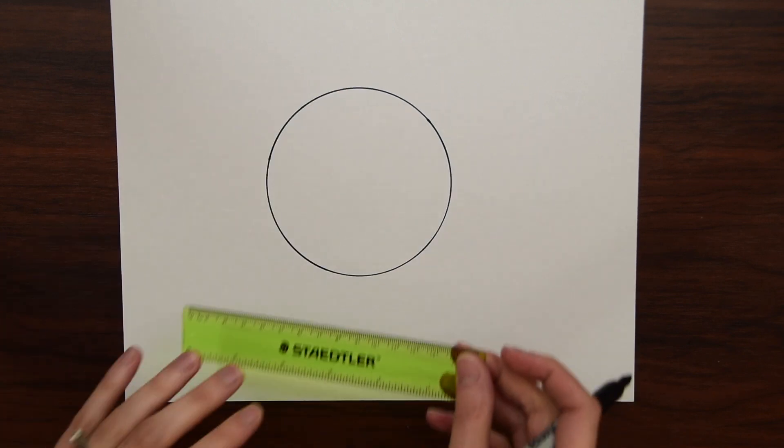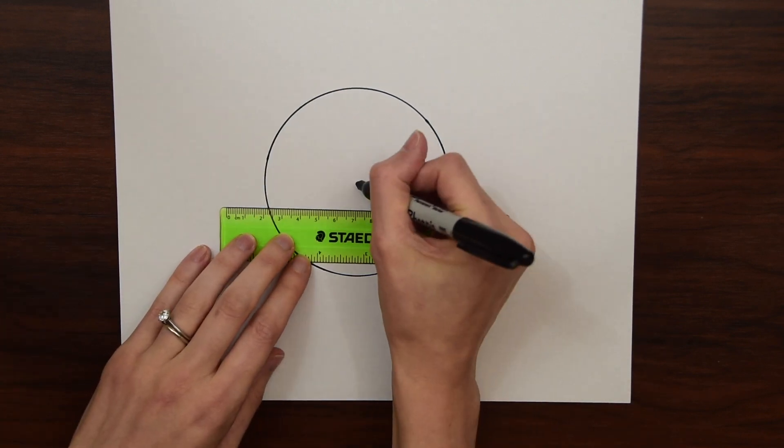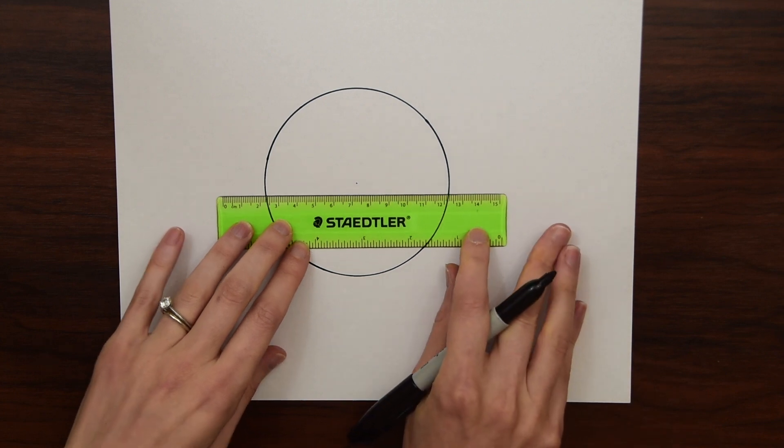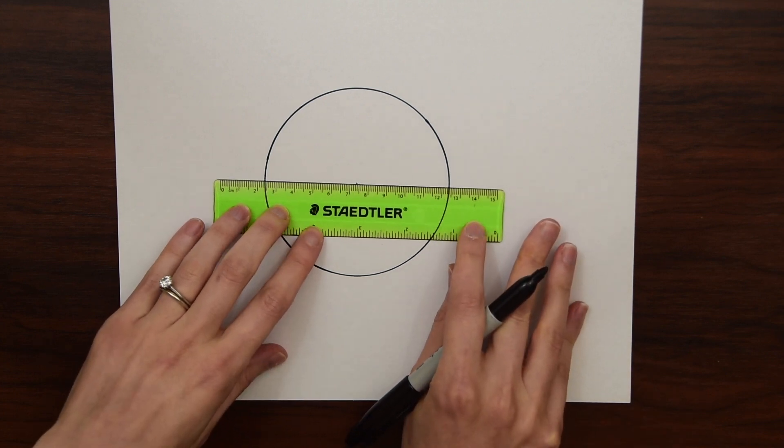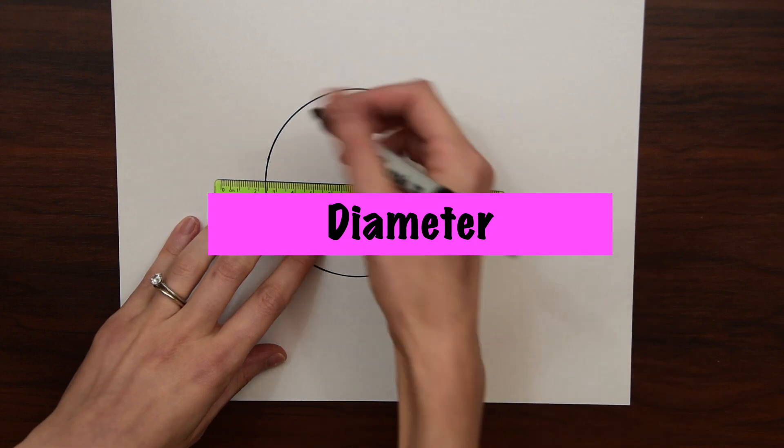Next we are going to find our midpoint which is right here which is where our compass was and just draw a line going all across the entire circle drawing a diameter.